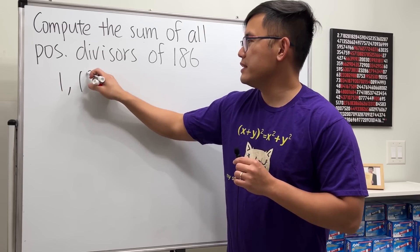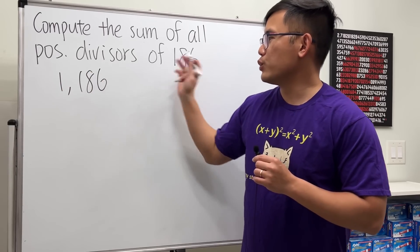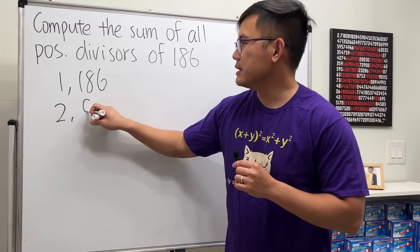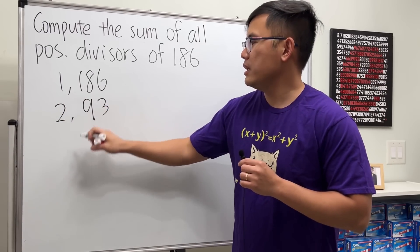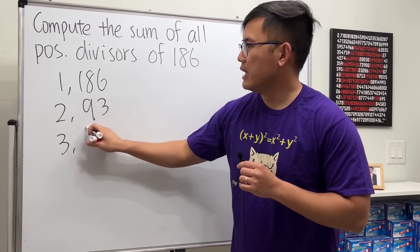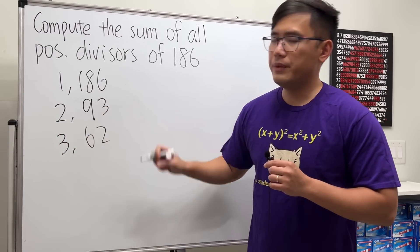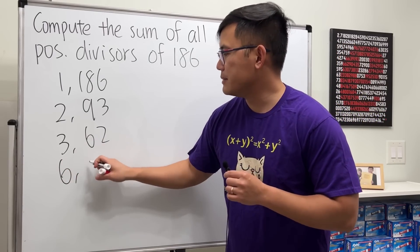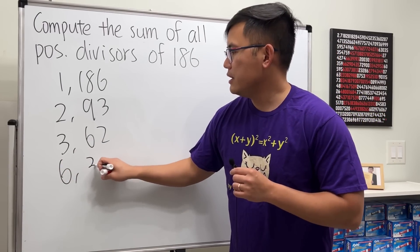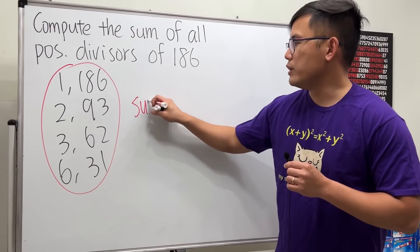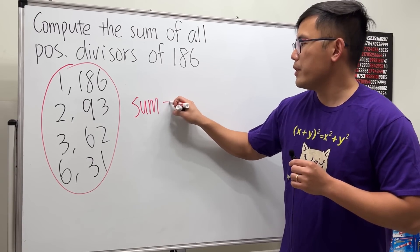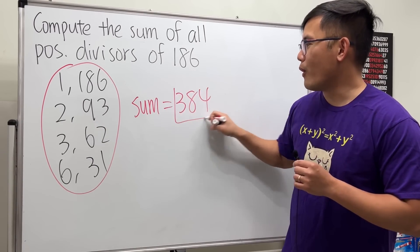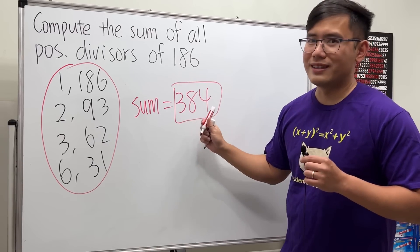1 times 186 equals 186, 2 times 93, 3 times 62, and 6 times 31. If we sum all the divisors of 186 we get 384, and we are done.